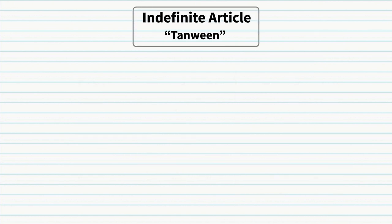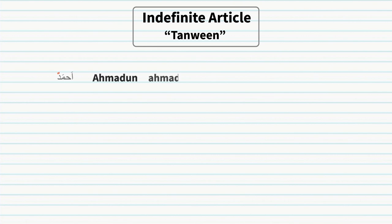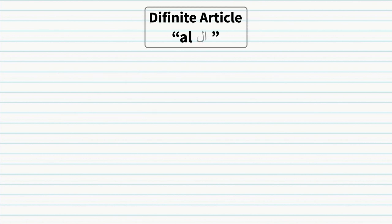Nouns in Arabic are by default in an indefinite state, and when a noun is indefinite it has a tanween attached to the end of it — for example, kitabun, waladun, najmun, babun. Proper nouns also have a tanween at the end but this does not mean they are indefinite, since a proper name can't be indefinite. For example, Ahmadun. Only proper masculine nouns have a tanween; proper feminine nouns only have a damma at the end.